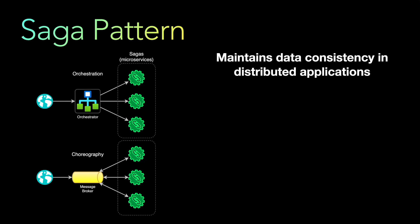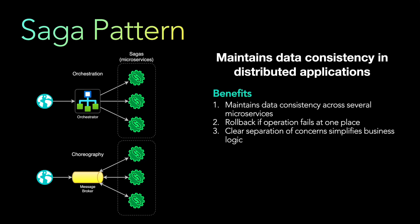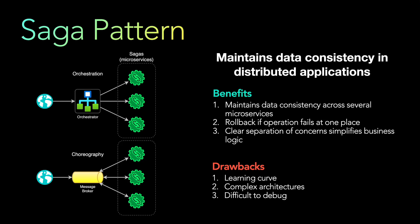The benefits of the saga pattern include maintaining data consistency across multiple microservices — possibly the only reliable way to achieve this in distributed systems. It also allows rollback if something fails in one place, similar to transactions, and provides a clear separation of concern that simplifies business logic. The drawbacks are a steep learning curve, complex architecture, and difficulty in debugging.